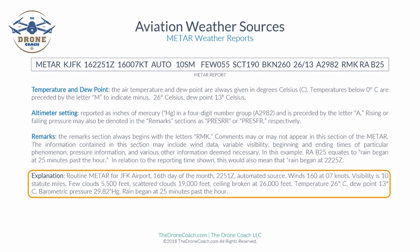Let's review the METAR report in its entirety from left to right. Routine METAR for JFK, 16th day of the month, 2251 Zulu, automated source, wind 160 degrees at 07 knots, visibility 10 statute miles, few clouds at 5,500 feet, scattered clouds at 19,000 feet, broken clouds at 26,000 feet, temperature 26 degrees Celsius, dew point 13 degrees Celsius, barometric pressure 29.82 inches of mercury, rain began at 25 minutes past the hour.